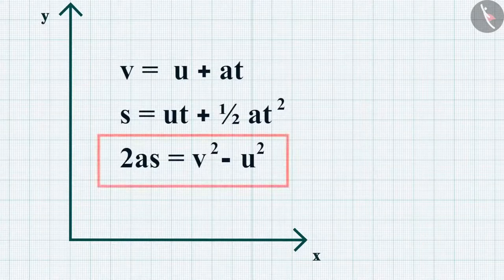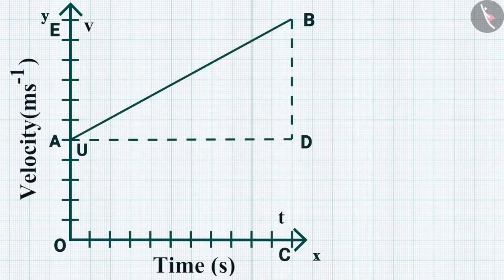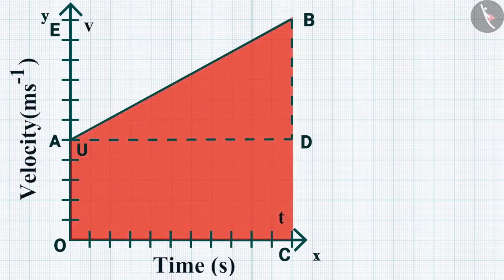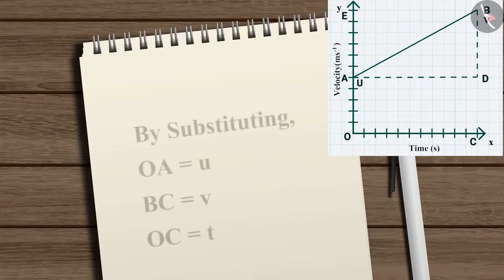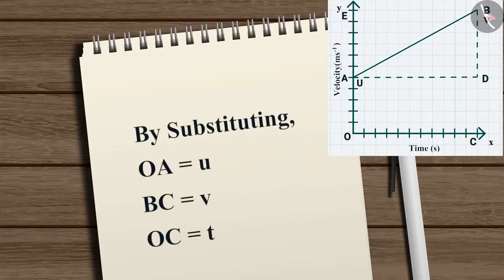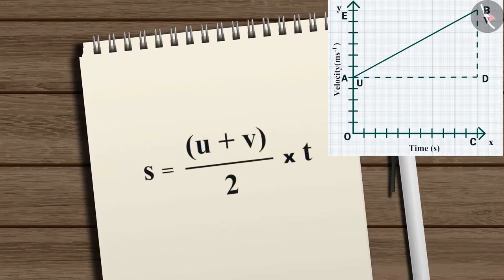Now let us move to the third equation — the position-velocity relation. From the velocity-time graph, the distance S equals the area of trapezium O, A, B, C. Applying the formula for the area of a trapezium, S equals (OA plus BC) divided by 2, multiplied by OC. Substituting OA equals U, BC equals V, and OC equals T, we get S equals (U plus V) divided by 2, times T.